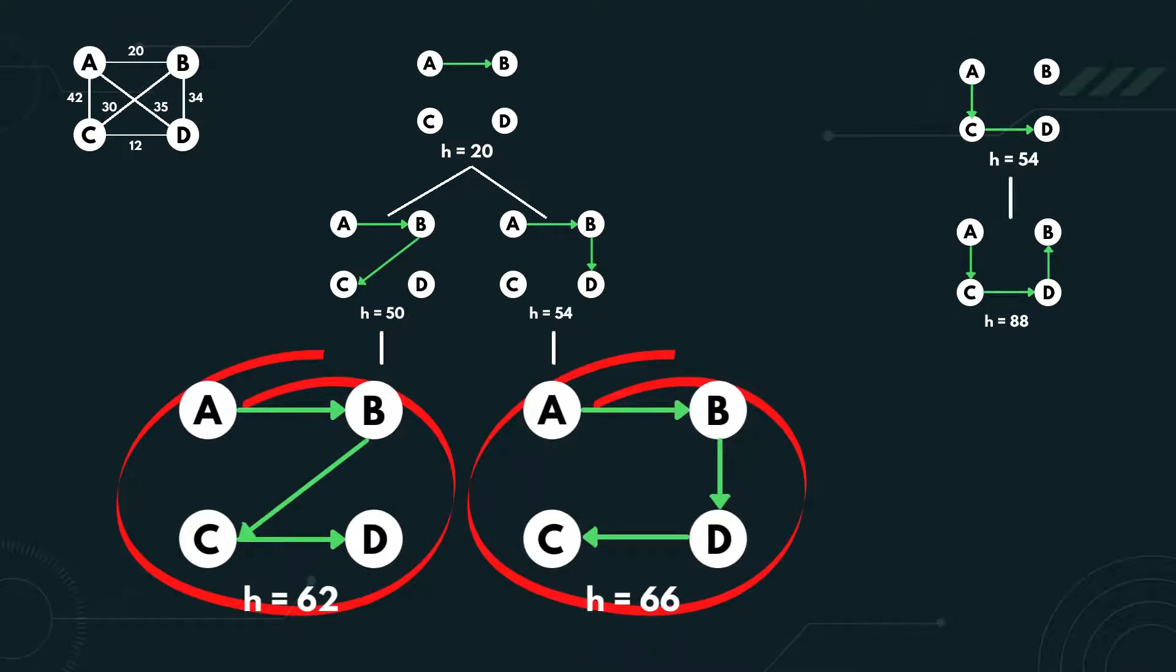Both successors are still better than A, C, D, B, which has a heuristic value of 88. Since we haven't reached the goal yet, we expand this too.